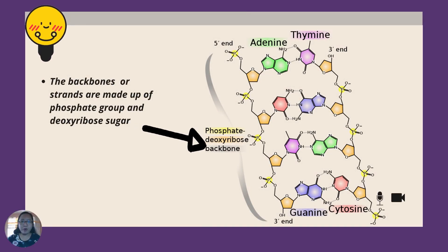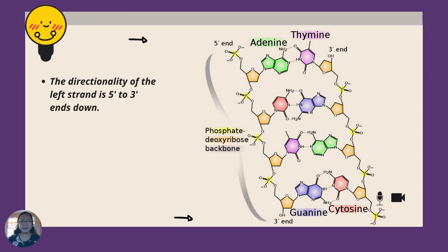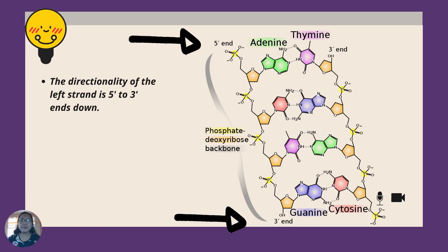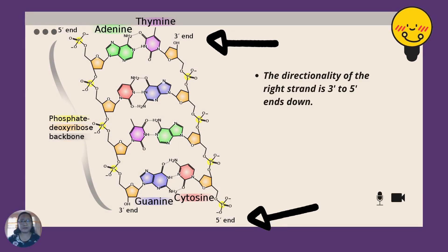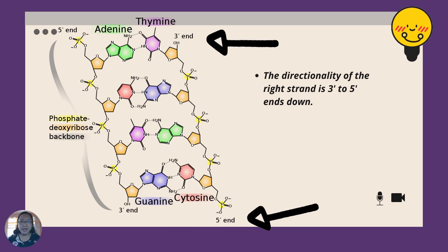The backbone strands are made up of the phosphate group and the deoxyribose sugar. The directionality of the left strand is five prime end to three prime end going down. On the other hand, the directionality of the right strand is three prime end to five prime end going down.